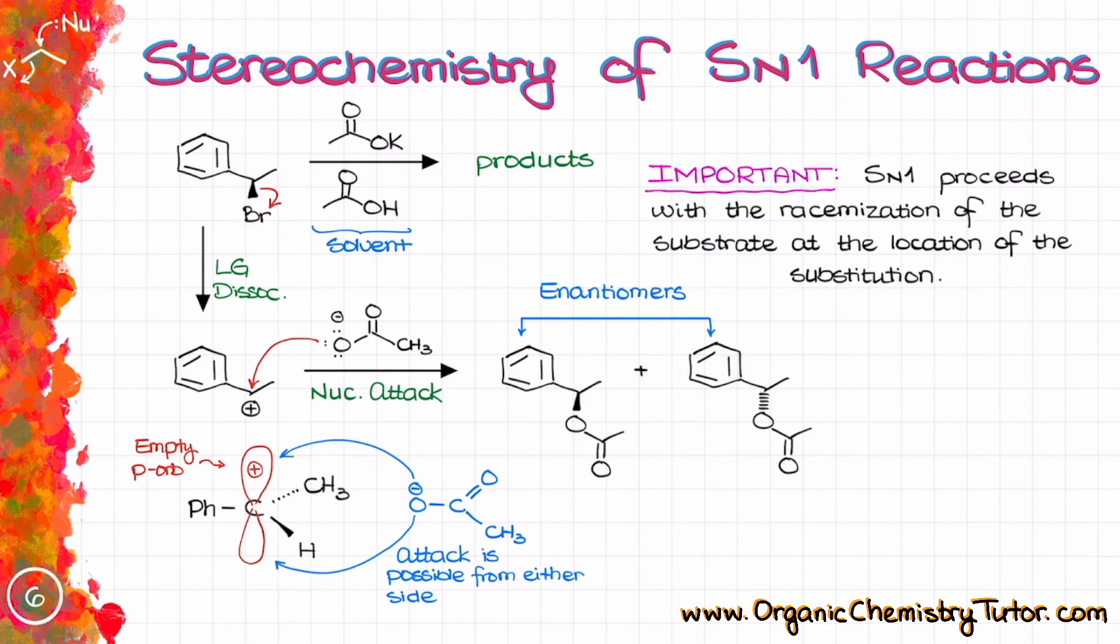Thus, when it comes to SN1 reactions, they proceed with the racemization, aka the loss of stereochemistry and formation of both possible stereochemical outcomes.